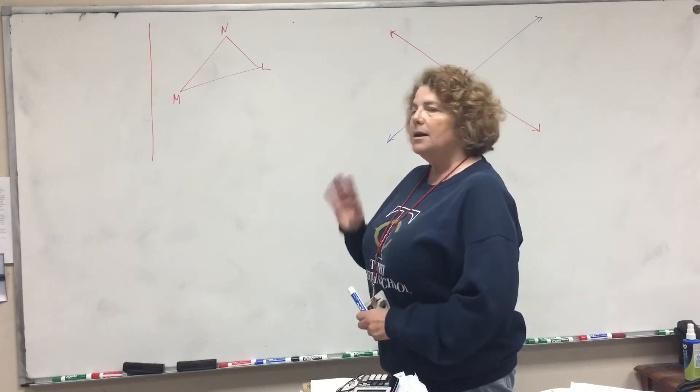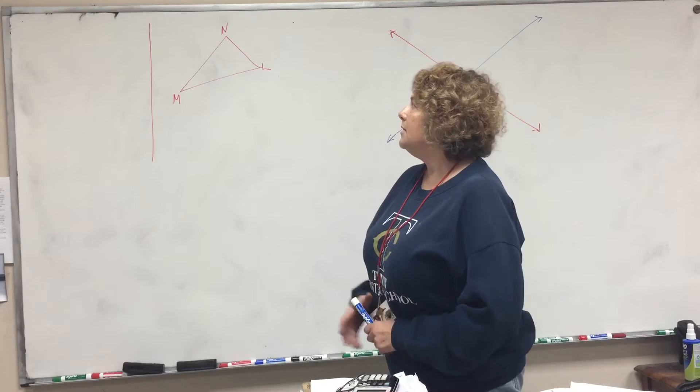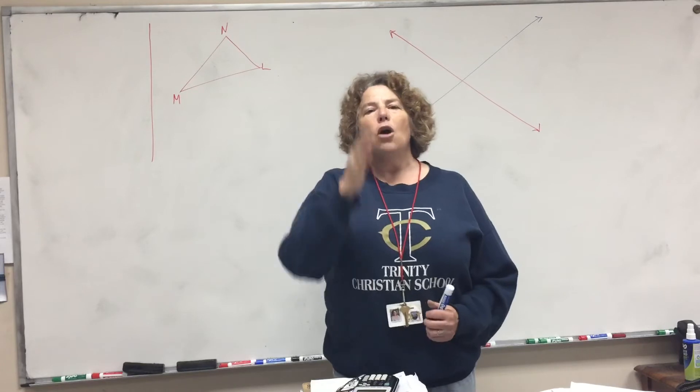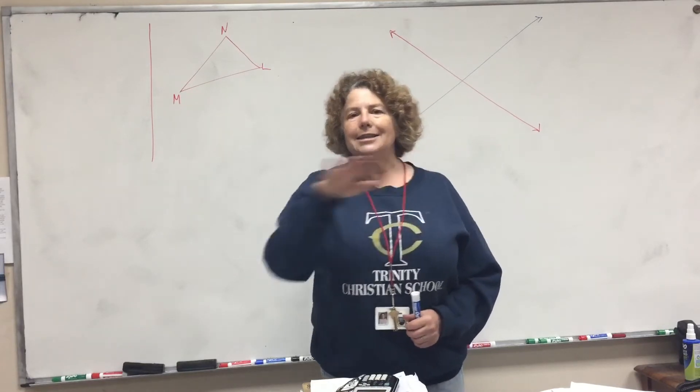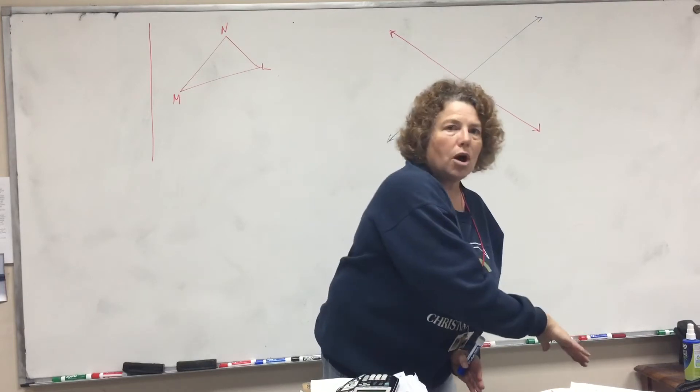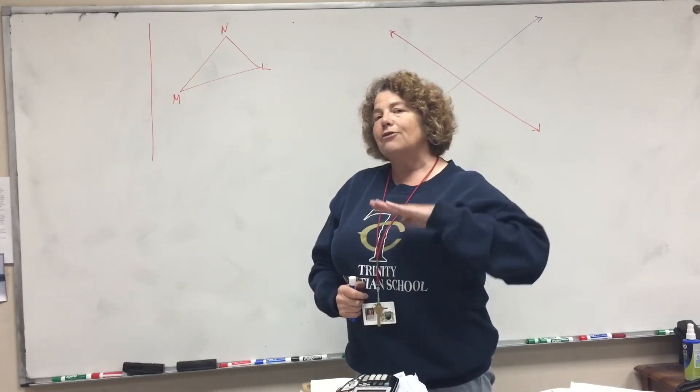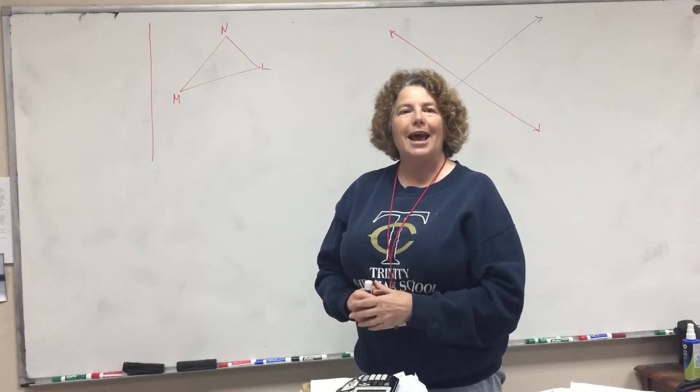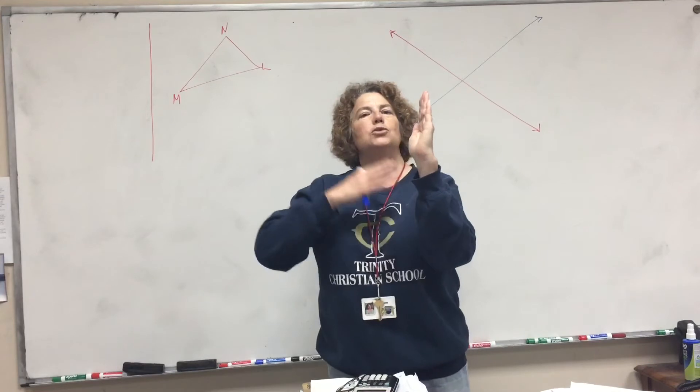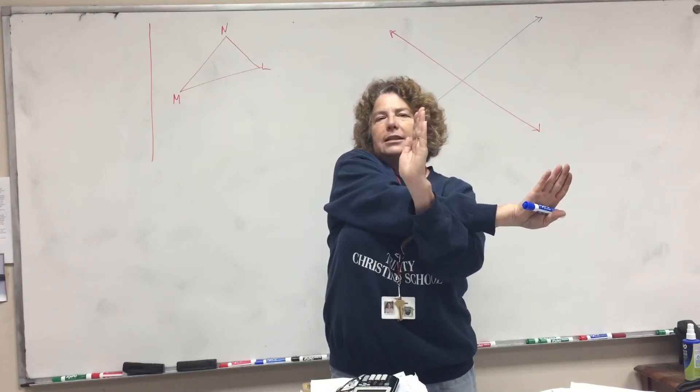Now, how to draw a reflection. If you're asked to reflect something over a line - it could be the x-axis, the y-axis, or a certain line that's drawn - that line is called the axis of symmetry. An axis of symmetry is when something is the same on this side and reflected on that side.